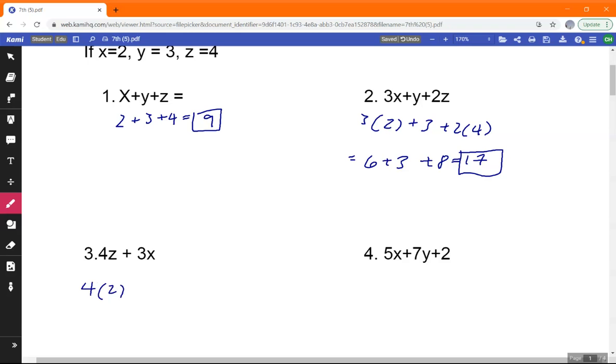Okay, 4z plus, that is wrong. Oh my god, what's wrong with me today? Okay, 4 times 4 plus 3 times 2, 16 plus 6 equals 22.